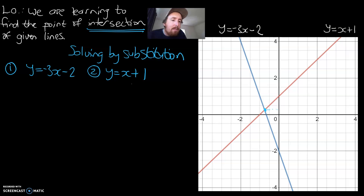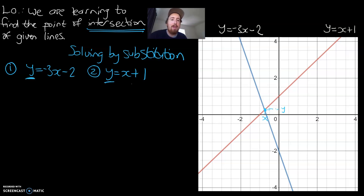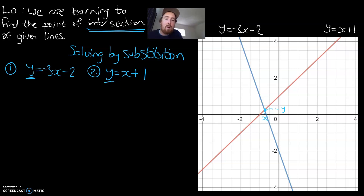At the point of intersection, we have a given y value and a given x value, and for both equations the x and the y have the same value. What I'm suggesting is that since y is the same in both equations, they are mathematically the same thing. So y equals negative 3x minus 2 is also going to equal x plus 1. We're going to equate the two sides: negative 3x minus 2 equals x plus 1.